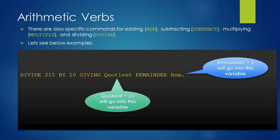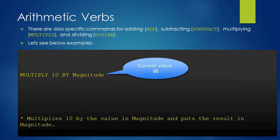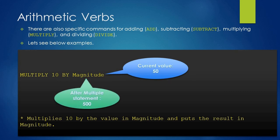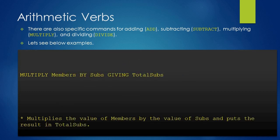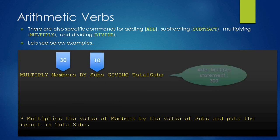Next is MULTIPLY. In the first example, we are multiplying 10 by the value in the magnitude variable and the result of this multiplication will go into the magnitude variable. In the next multiply example, we are multiplying the value of the members variable by the sub variable and giving the result to the total sub variable. The values in the members and sub variables will remain the same.